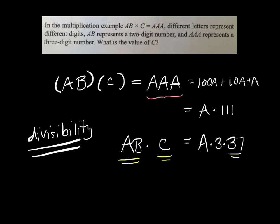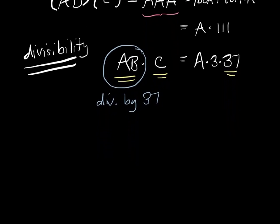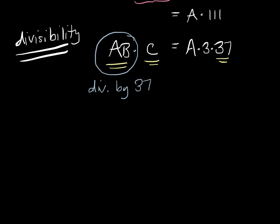So that means AB has to be divisible by 37 because C is only one digit. So this thing is divisible by 37. Now what? That really narrows down the possibilities for AB. What could it possibly be? What two-digit numbers do you know are divisible by 37?